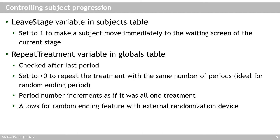The 'repeat treatment' variable is in the globals table. Normally at the end of the last period the experiment ends. However, if you set the repeat treatment variable to a value greater than zero, CETRI decides to repeat the entire treatment with the same number of periods as set the first time around. This can be very helpful to implement a random ending period.